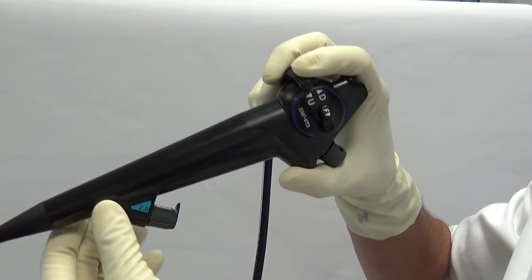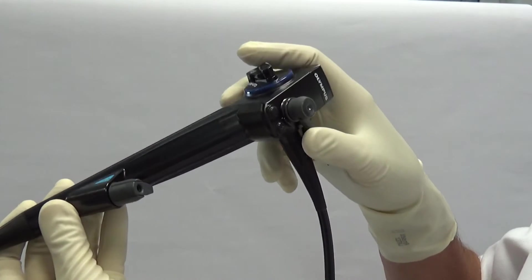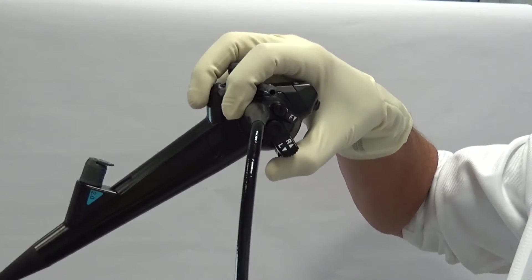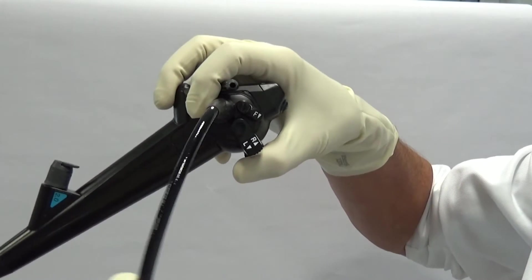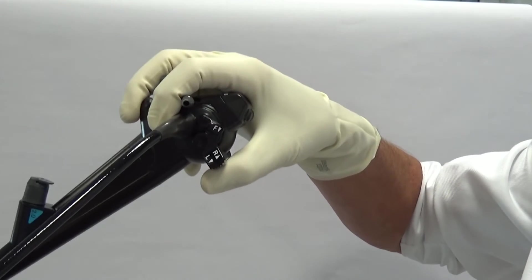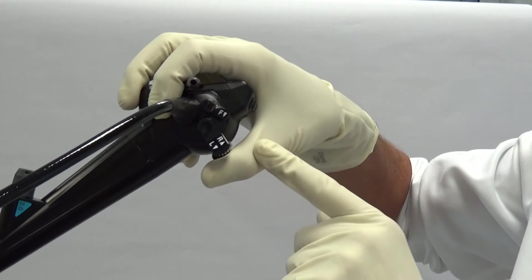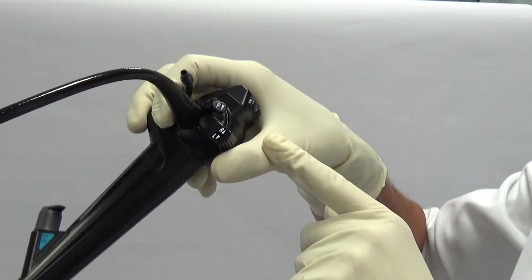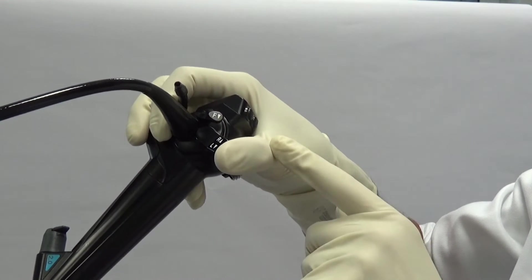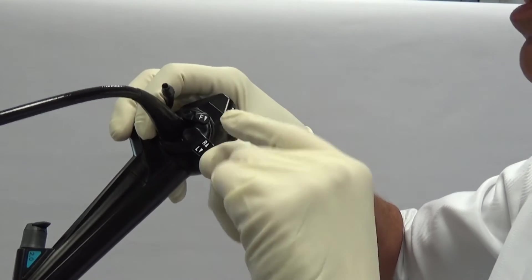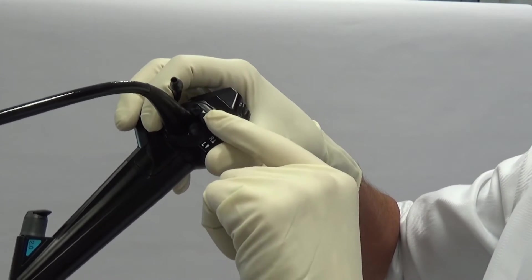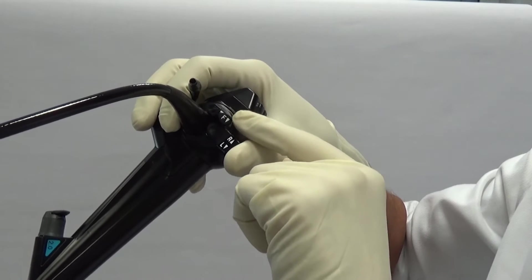There are some colleagues who also like to drive the levers with their thumb, but again in this position here you have only one finger, the thumb, to control two levers, and then you would have to take your other hand and then control the lock unlock switch.